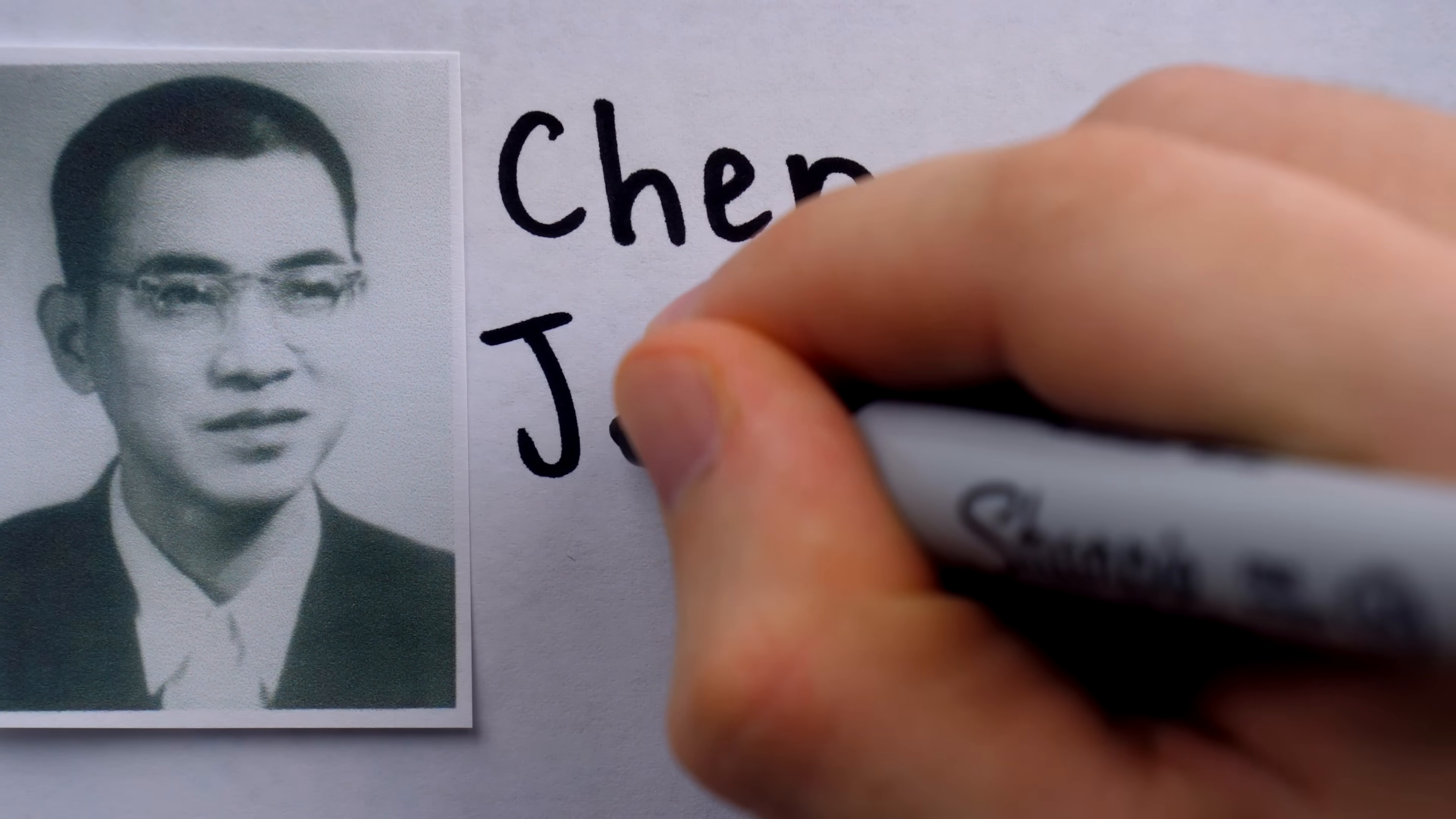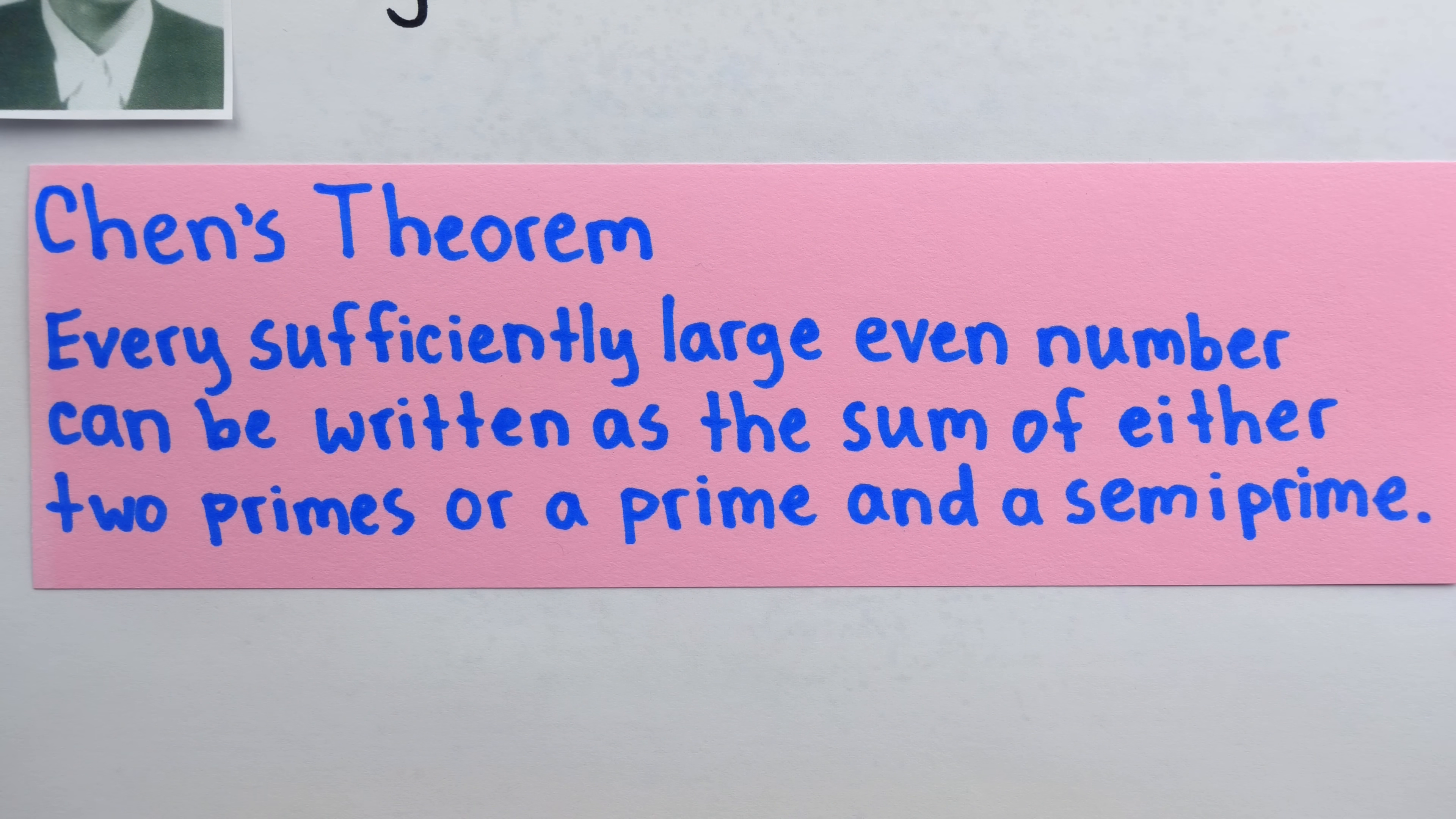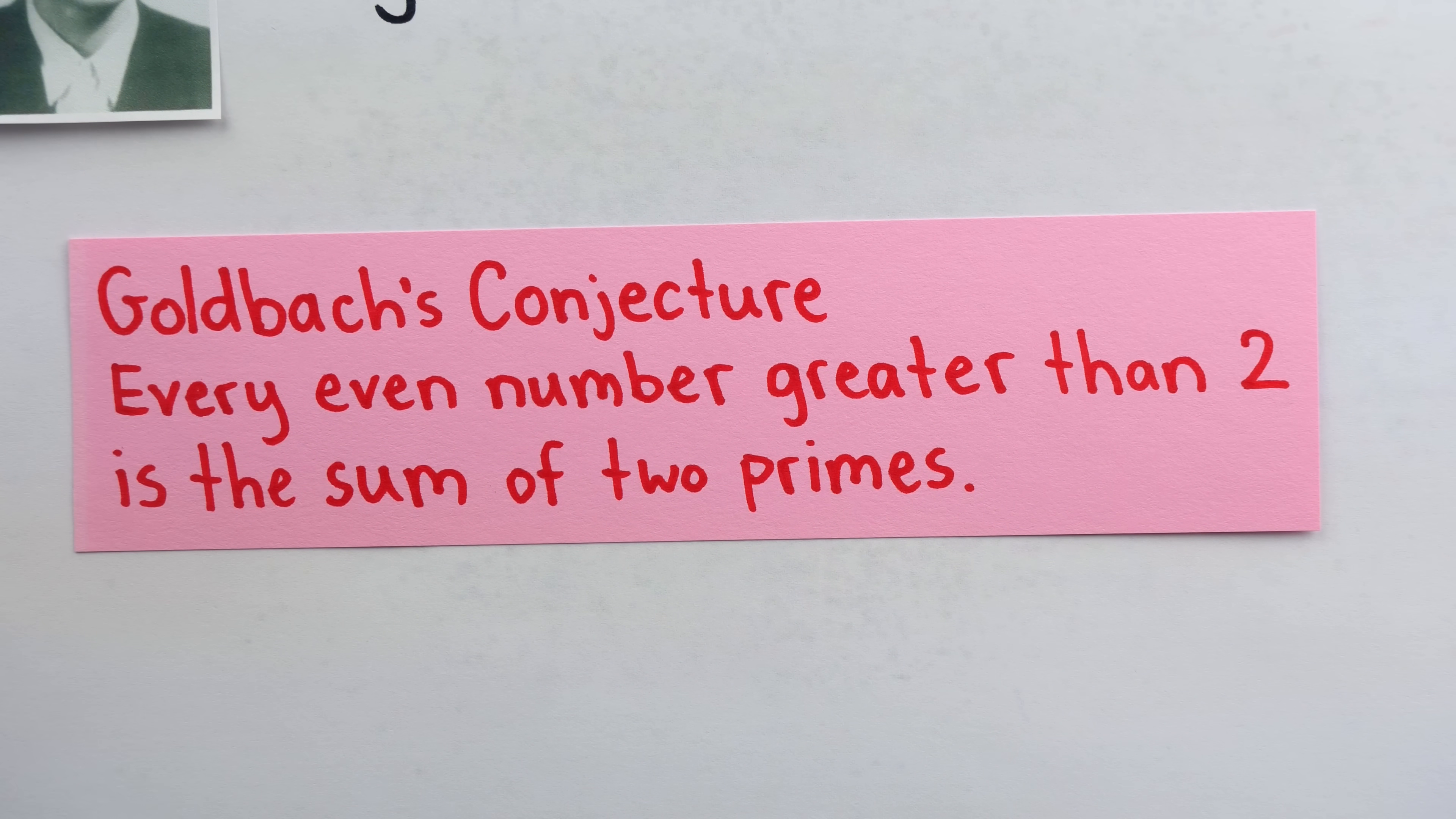Chen primes, by the way, are named after Chinese mathematician Chen Jing-run. He proved what's known as Chen's theorem, and if you read through the theorem, you may recognize that it's a weakened form of Goldbach's conjecture. Goldbach's conjecture is one of the oldest and most famous unsolved problems of mathematics today.